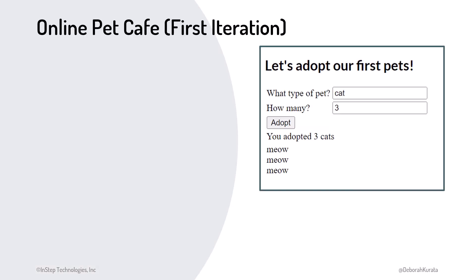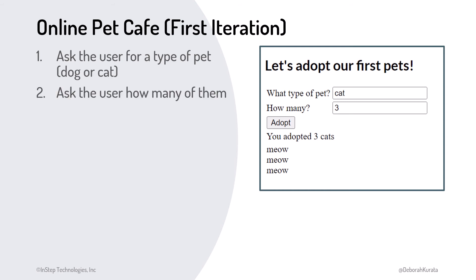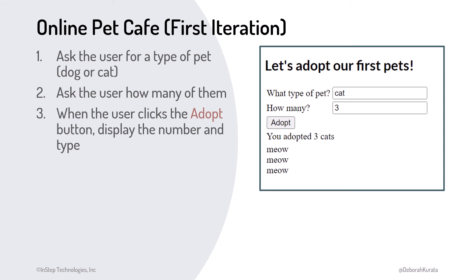For our first task, we break it into instructions. We define an input where the user puts or enters something into the program — in this case, cat or dog — and a second input asking how many of them. The application then watches for the user to click the Adopt button. When it's clicked, we tell the computer to perform an output where the program puts or displays something onto the screen — in this case, it displays the number and type of pets.